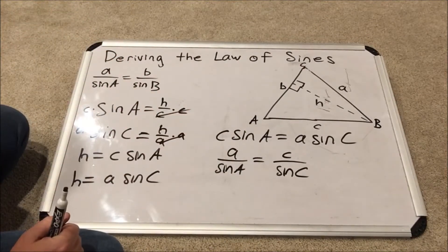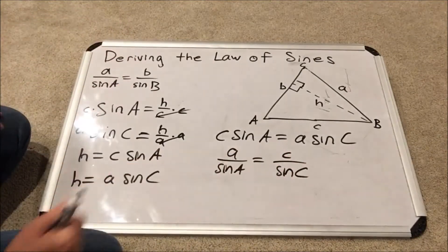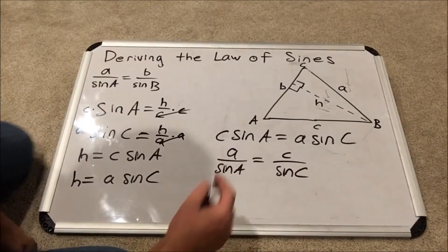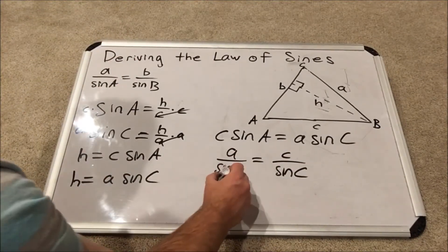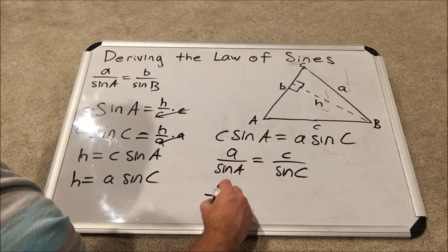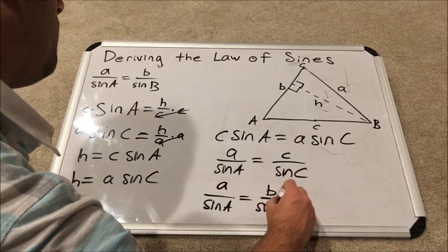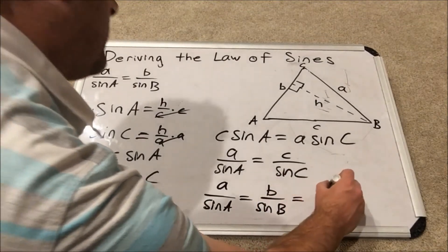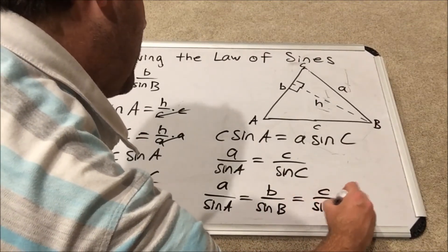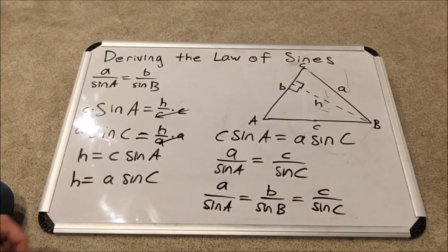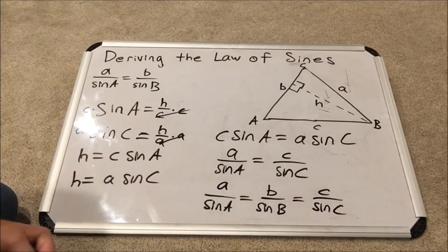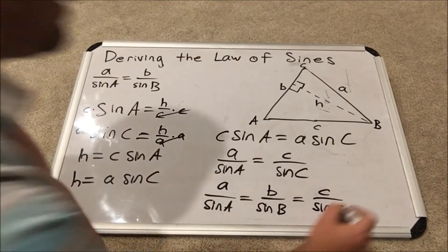Another way to interpret the transitive property is that all three of these things are equal to each other. So you can write them in a list: A over sine A equals B over sine B equals C over sine C. They are all equal to each other. We have just proved and derived the law of sines.